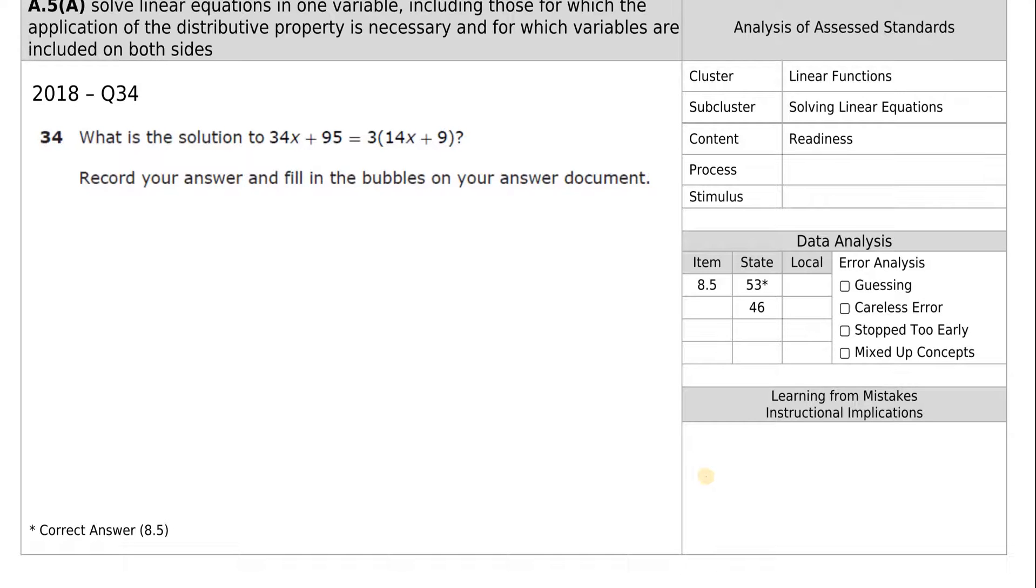Here we have same sort of issue. 34x plus 95 equals, we've got parentheses, a number in front. We have to distribute. 3 times 14 is going to give us 42x. 3 times 9 is going to give us 27. Bring this other side down, 34x plus 95.